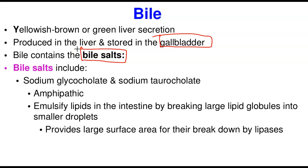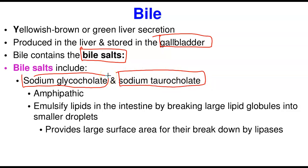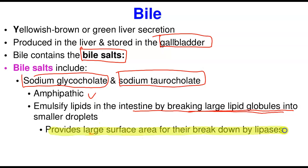Bile salts include two main types: sodium glycolate and sodium taurocholate. Just like lipids, they are amphipathic in nature — one part is hydrophilic and the other part is hydrophobic. What they do is emulsify lipids in the intestine by breaking large lipid globules into smaller droplets, providing a large surface area for lipids to be broken down by the enzyme lipase into fatty acids and glycerol.